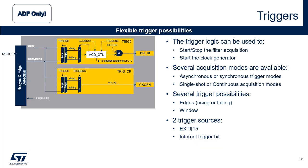This slide describes the triggers present in ADF. The digital filter and the clock generator have their own trigger block. The trigger blocks are used to start and stop the acquisition of the digital filter or to start the generation of the ADF CCK1.0 clocks. The possible trigger sources are EXTI 15 signal and the internal signal TRGO. Several acquisition modes are available for the digital filter: asynchronous or synchronous triggered modes, single shot or continuous acquisition modes. Several trigger possibilities: edges, rising or falling, and window.